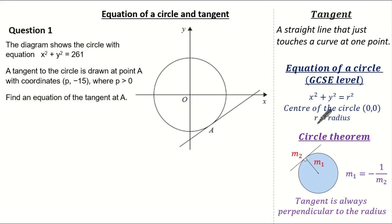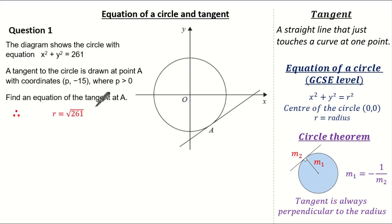Remember the facts required at GCSE level. We know the equation of a circle as x squared plus y squared equals the radius squared when the centre is at the origin. So we know 261 is the radius squared, and therefore the radius is the square root of 261. Now knowing this, let's label what we know.